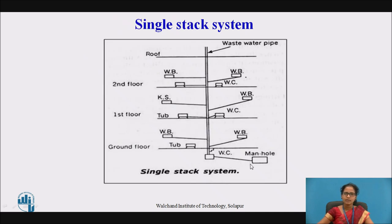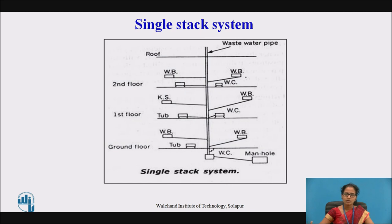This is the single stack system. Here you can see the different floor levels: the ground floor, first floor, second floor, and the terrace floor. There is a vertical pipe called the waste water pipe. The waste water pipe collects waste water which comes from bathrooms, WCs, sinks, wash basins, etc. This waste pipe does not include any human or animal excreta. This waste pipe is connected to a manhole, which is an opening fitted with a closed structure through which a man can enter for cleaning, maintenance, or inspection purposes.